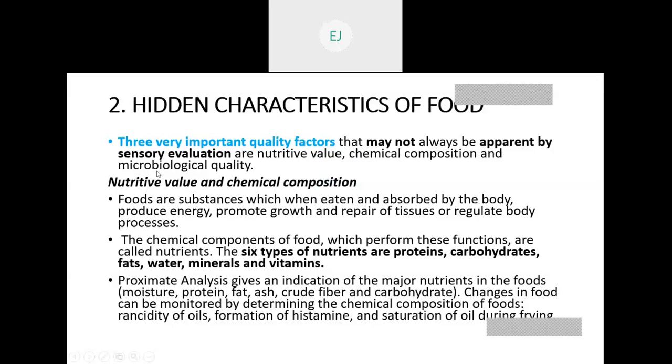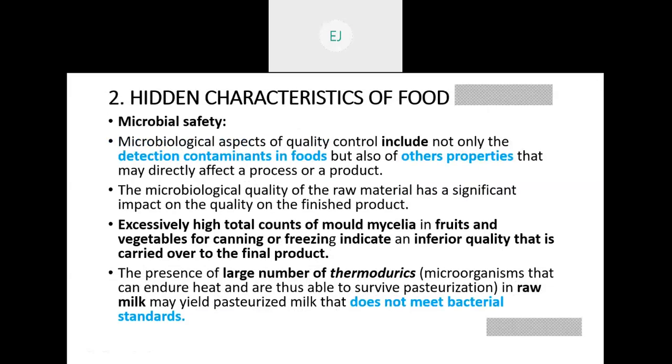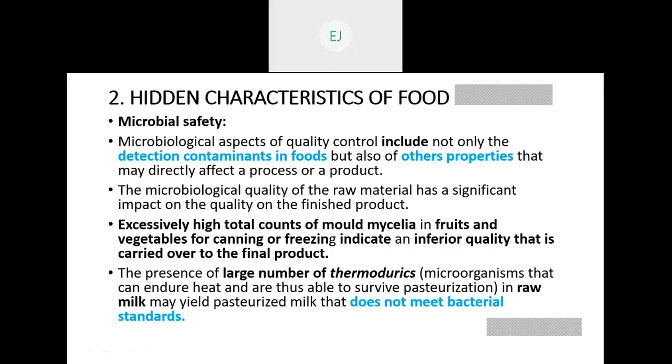Our third one is microbiological quality. Microbiological quality means the microbiological safety — it is a component of detection of contaminants in food, and it actually determines whether the food is safe for us or not. For example, if any food contains a high count of mold or bacteria, then we say that it is not safe for our body. And if pasteurized milk has a large number of thermoduric bacteria, that means it does not meet the bacterial standard and is not safe for us.